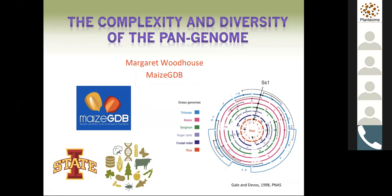So down at the bottom, there is a circle there, and that is the alignment of a bunch of grass genomes. This alignment was done by Gale and Devos in 1998 in a PNAS paper, and it was one of the first ways we began to look at genomes beyond just a single genome or a single species.